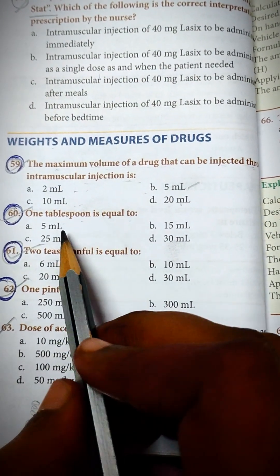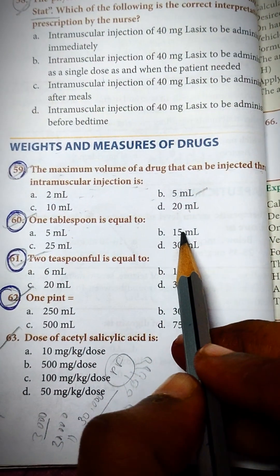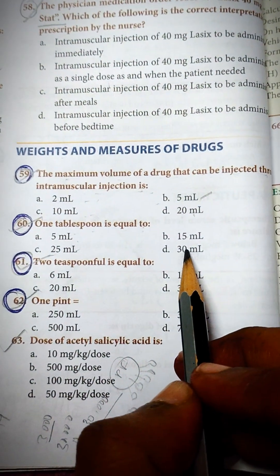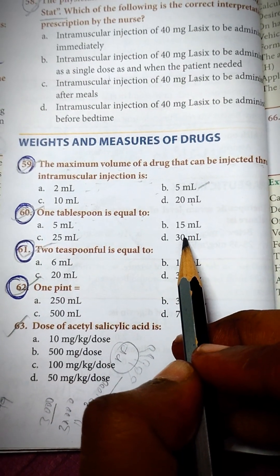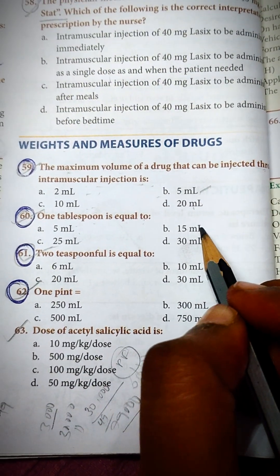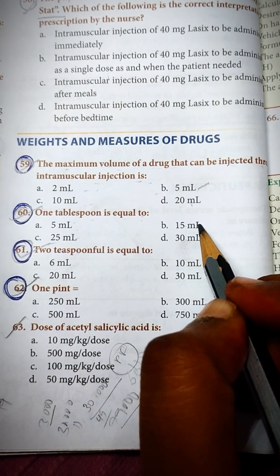1 tablespoon is equal to: 5 ml, 15 ml, option c 25 ml, option d 30 ml. The answer is b, 15 ml.